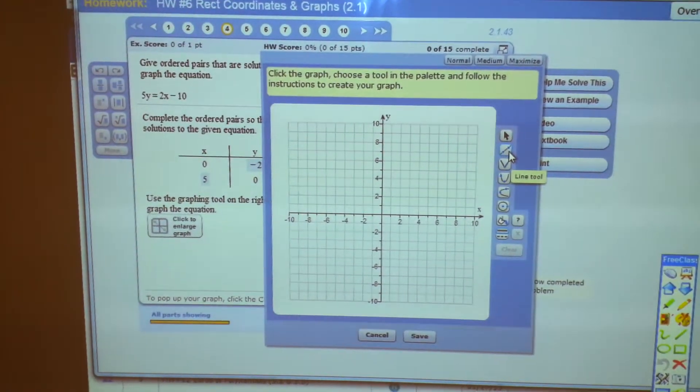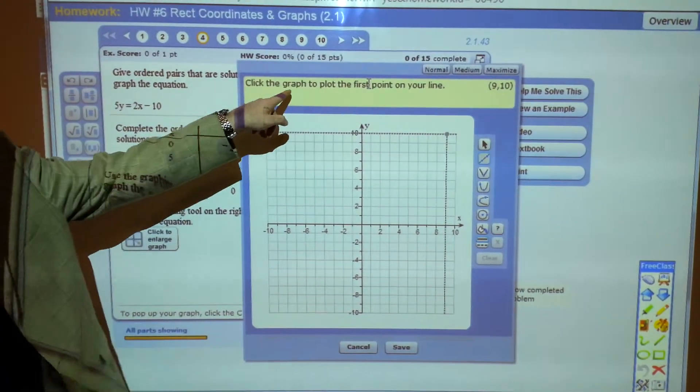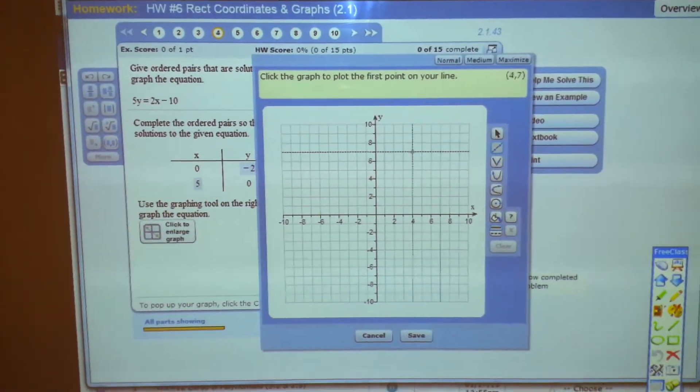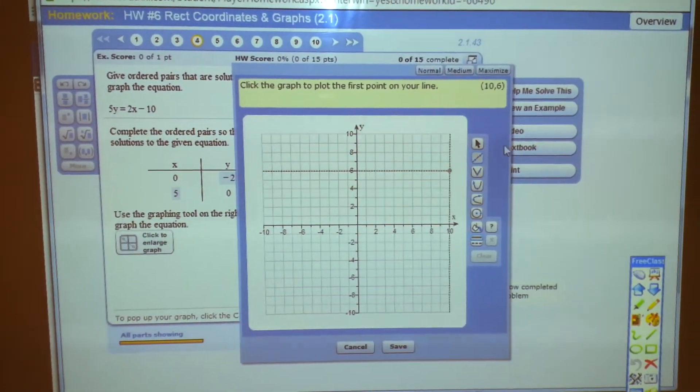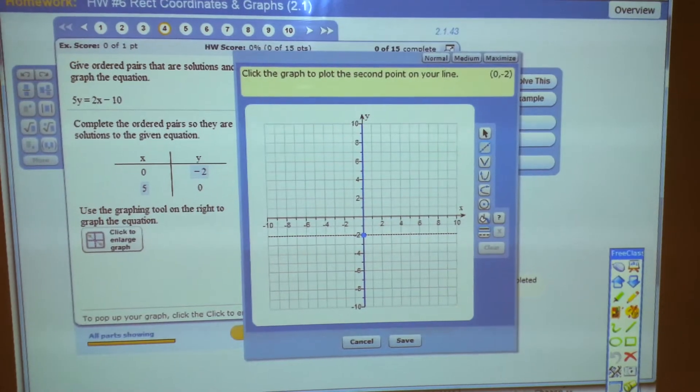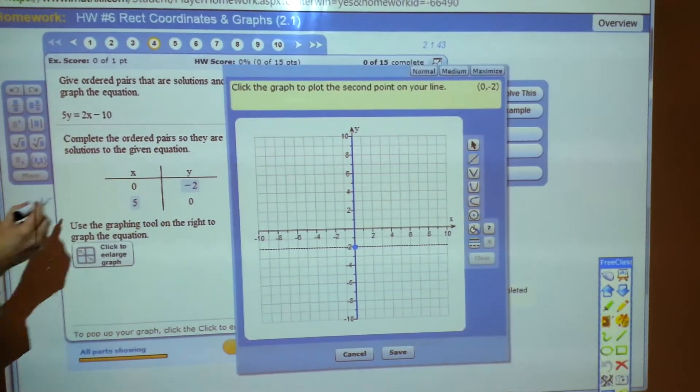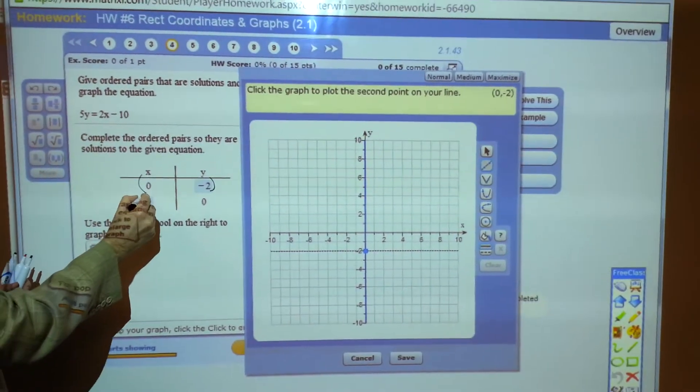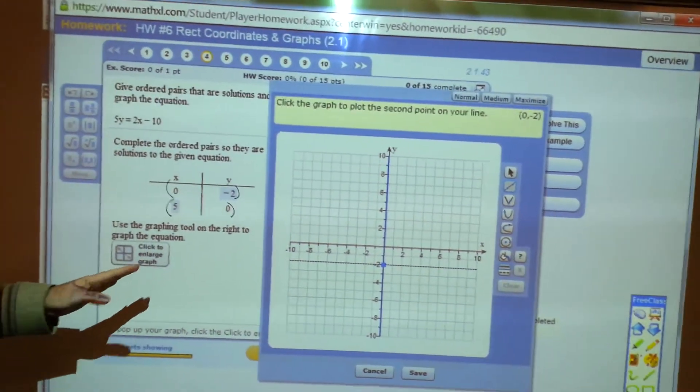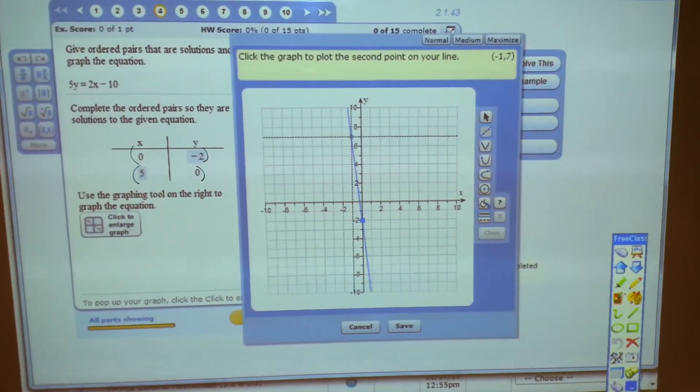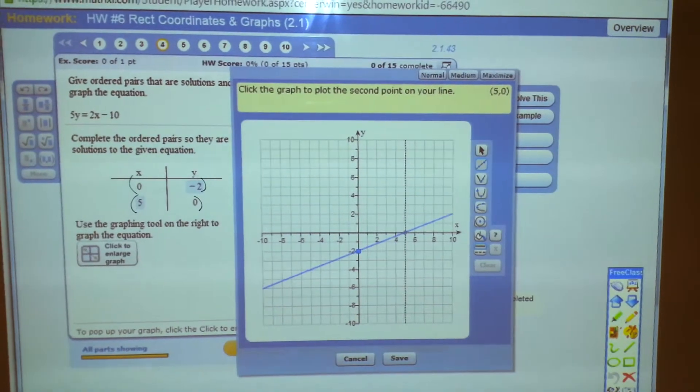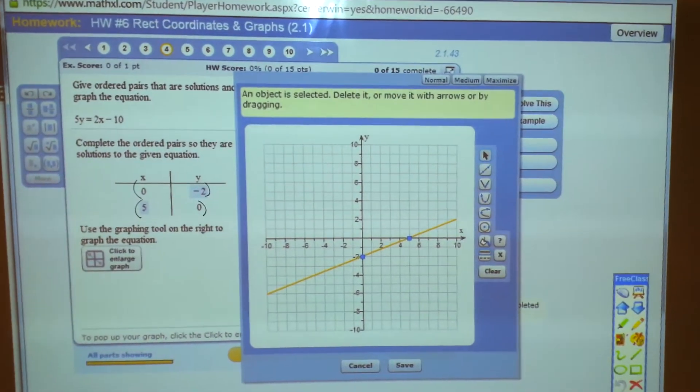And then you're going to plot the first point. Notice as you move the mouse along, it's telling you which point is up there in the upper right. So we want to plot the point 0, negative 2. So I've plotted this point. Now I've got to plot the second point. You need two points to graph a line. And notice as I move the mouse around, there's all the different lines that pass through that point 0, negative 2. So I need to plot 5, 0. There it is.